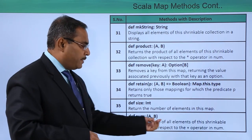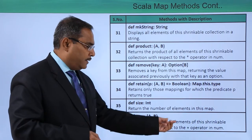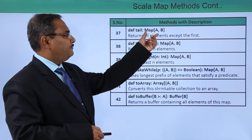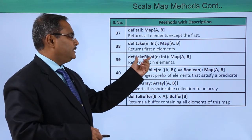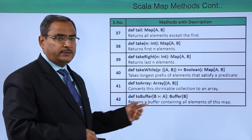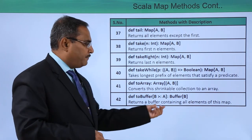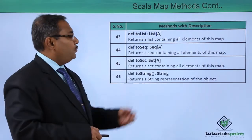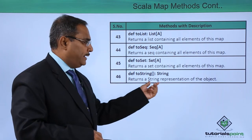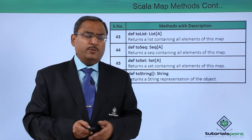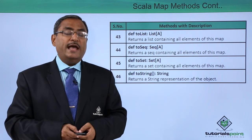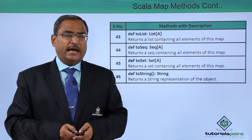We are having sum, which returns the sum of all elements of the shrinkable collection with respect to the + operator in Numeric. We are having tail, which returns all elements except the first, and take, which returns the first n elements. We are having takeRight and takeWhile. toArray converts this shrinkable collection to an array. toBuffer returns a buffer containing all elements of this map. We are having toList, toSeq, toSet, and toString, which returns the string representation of the object. Here we have discussed some of the commonly used methods of map-related applications.